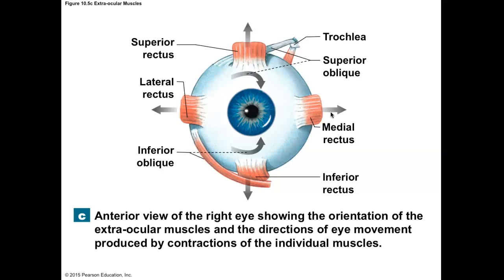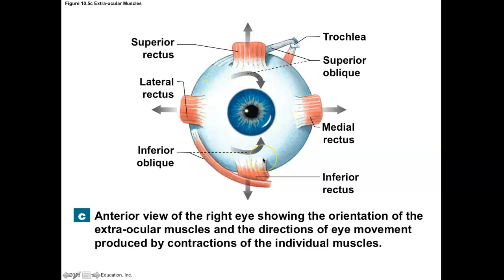Looking at the insertions, the term is the sclera of the eye. The sclera is the white part of the eye — it is the outermost layer, which we'll discuss more when we cover the nervous system.